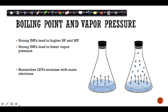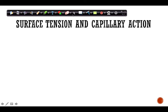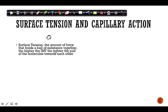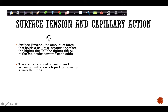Remember, London dispersion forces increase with more electrons. Other properties affected by IMFs include surface tension and capillary action. Surface tension is the force that holds a ball of a substance together — like water beading up after rain, where molecules adhere strongly to each other. The higher the intermolecular force, the higher the surface tension.